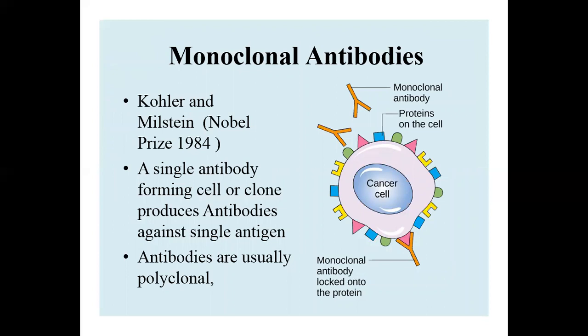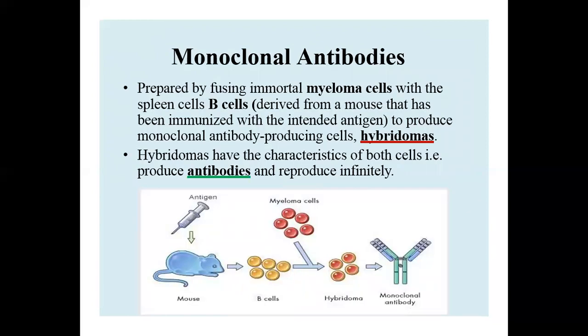Monoclonal antibodies were first discovered by Kohler and Milstein. These are produced by a single antibody-forming cell, and clones produce antibodies of similar origin. Monoclonal antibodies recognize the same kind of epitopes on an antigen. They are prepared by fusing immortal myeloma cells with spleen cells or B cells from a mouse immunized with the intended antigen. This hybrid is known as a hybridoma.